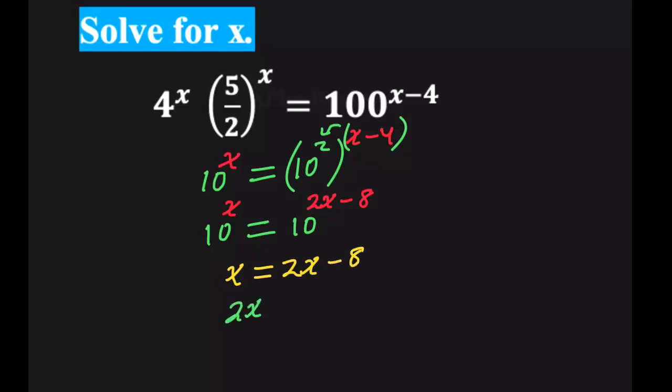And 2x minus x is equal 8. And finally, x is equal 8. And that's the value of x.